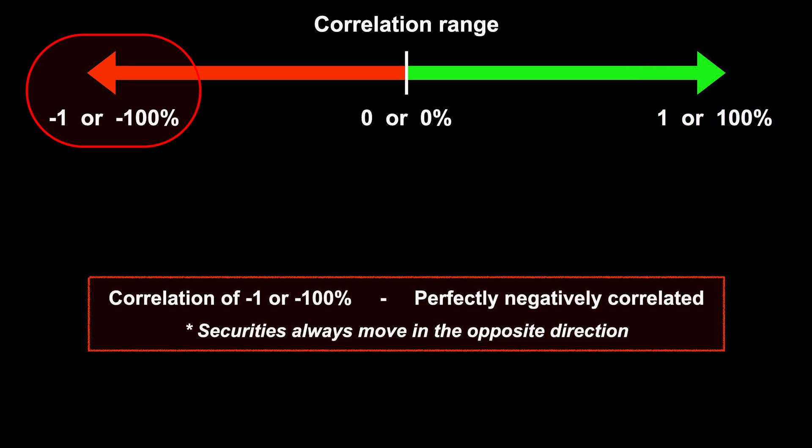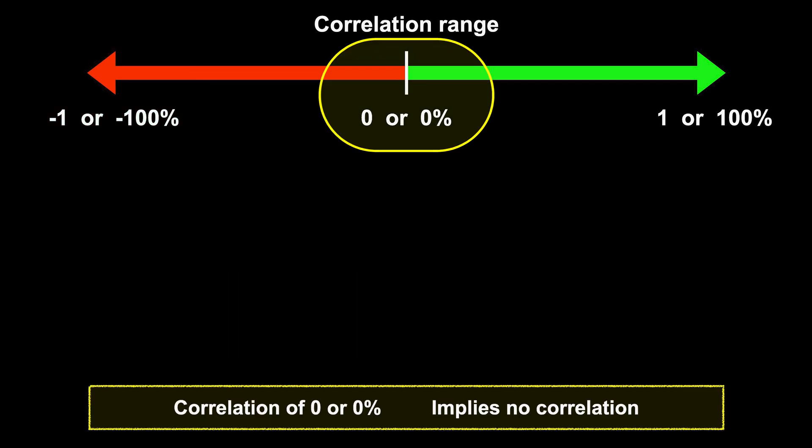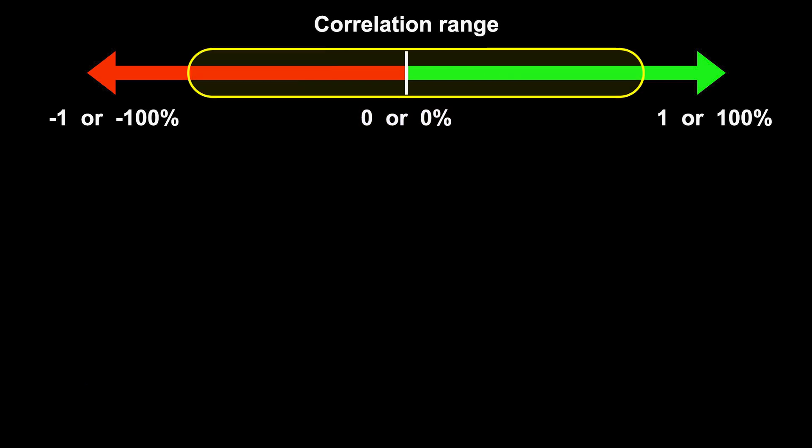A correlation of minus one, or minus 100%, means that the two securities or assets are perfectly negatively correlated — they move in the opposite direction. When one goes up, the other always goes down, and vice versa. A correlation of zero, right there in the middle, means the two assets have no correlation to each other. Since very few things are ever perfectly correlated, either positively or negatively, it's mostly going to land somewhere in between those two extremes. The higher or lower the value, the stronger the correlation — essentially, the further away from zero, the more correlated they are.